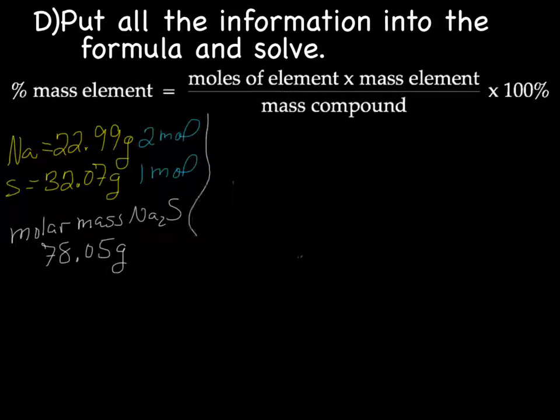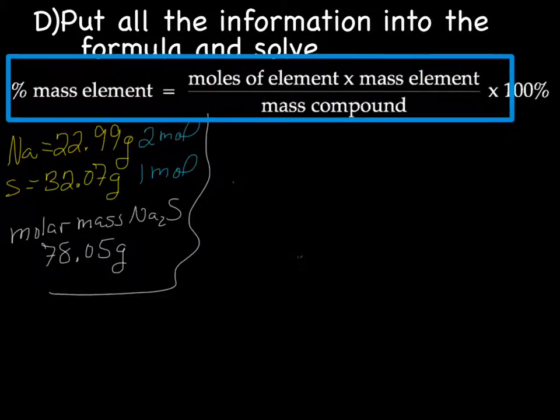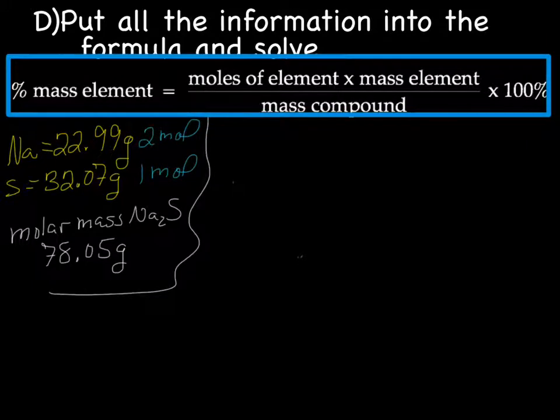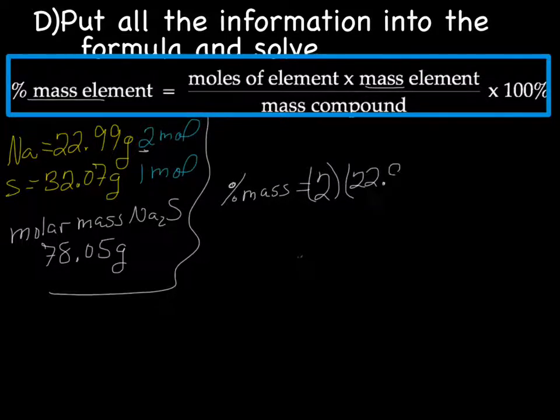And so now we take all of this information that we just figured out and stick it in to this formula here. We're trying to find out percent mass. So we've got percent mass equals moles of the element, and we do each element separately, so let's start with Na. So we have how many moles of Na? Two, because it's Na2. So two moles times the mass, which we came up with, 22.99,